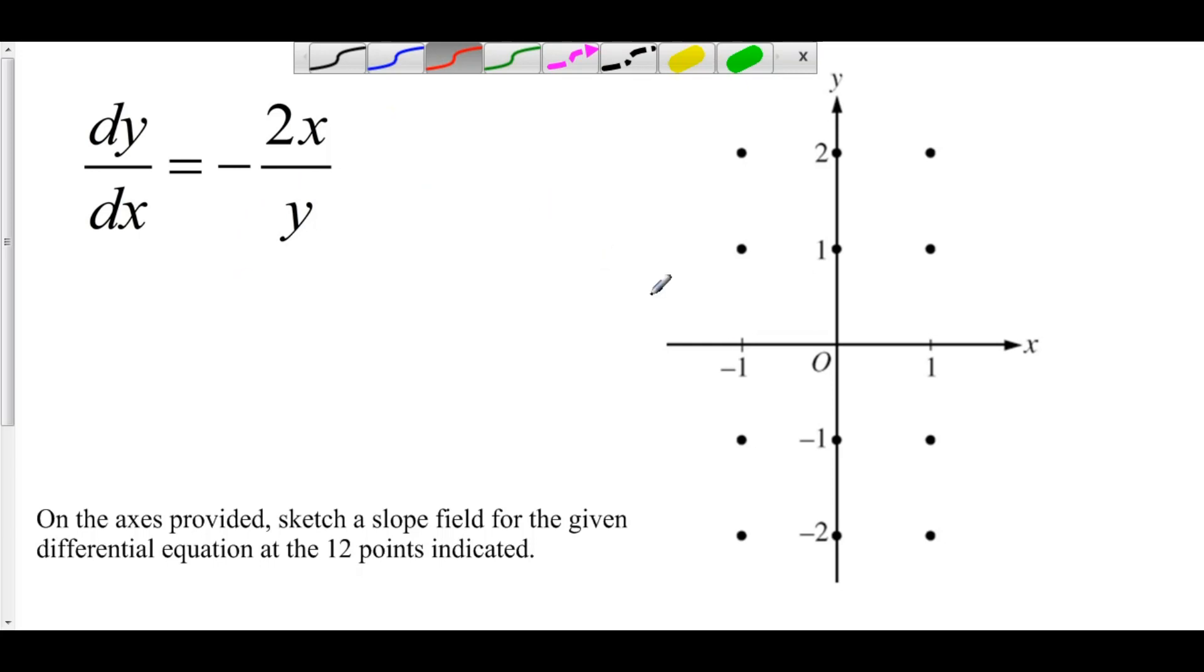So if we plug 0 into x and 1 into y we get negative 0 over 1, and that's 0. Well, what kind of a line has slope 0? A horizontal line. And so we draw a horizontal line at this point right here because that is the slope of y at that particular point.